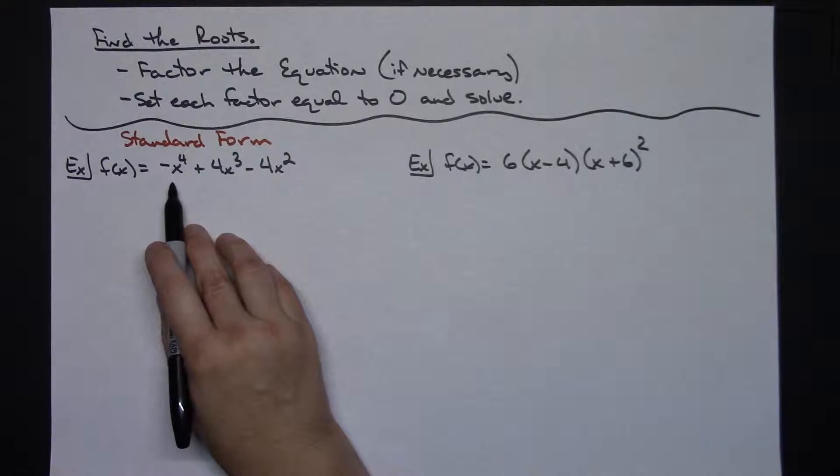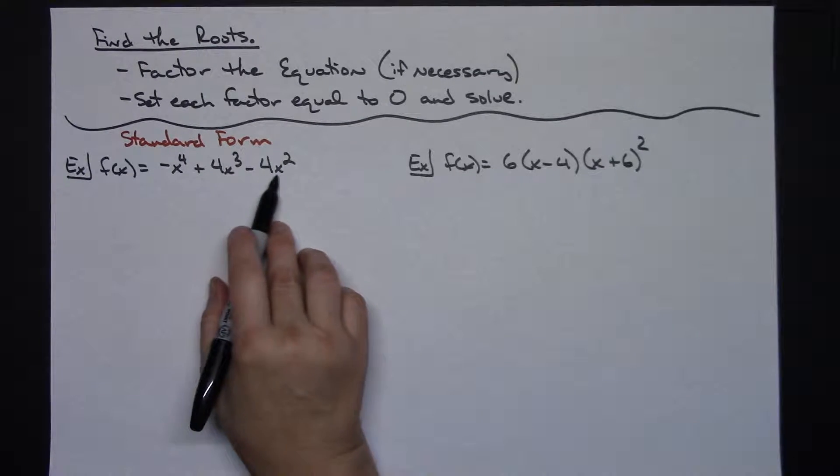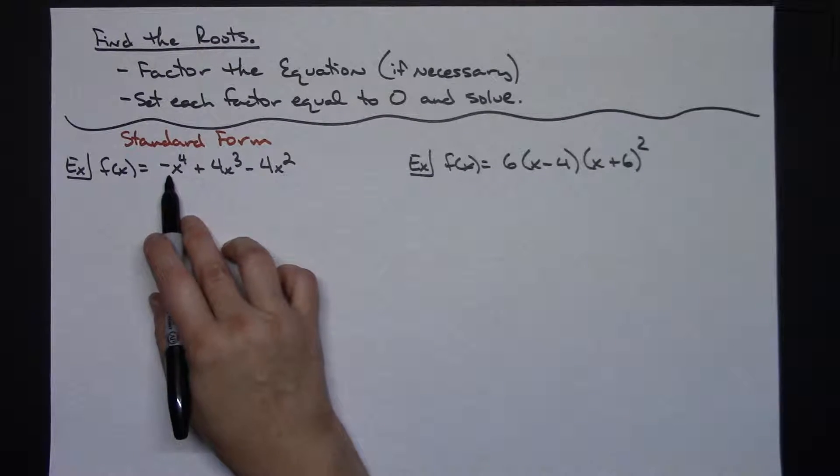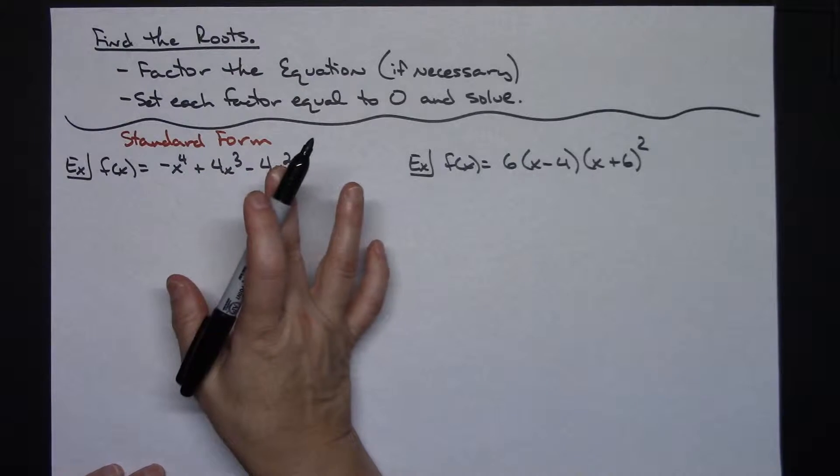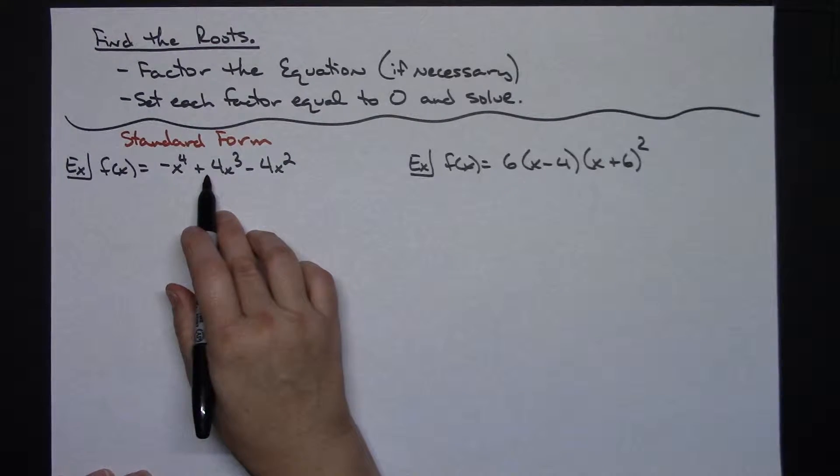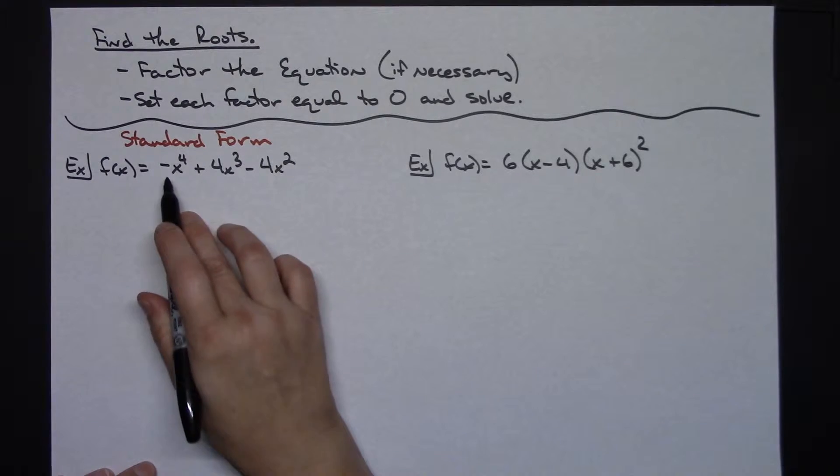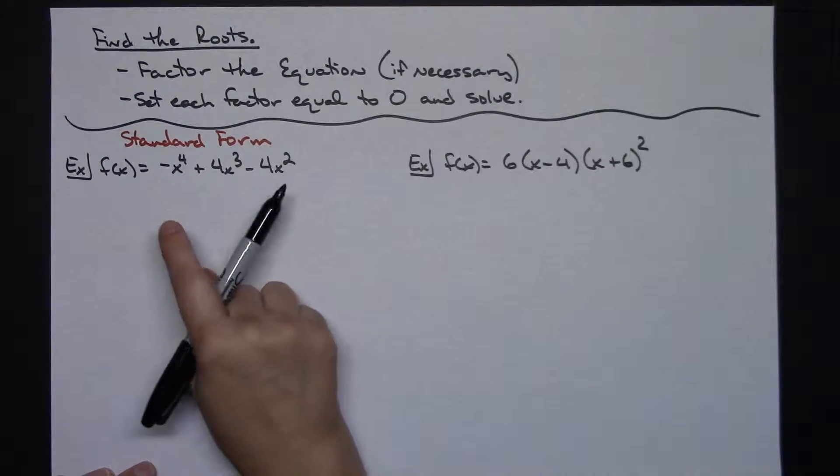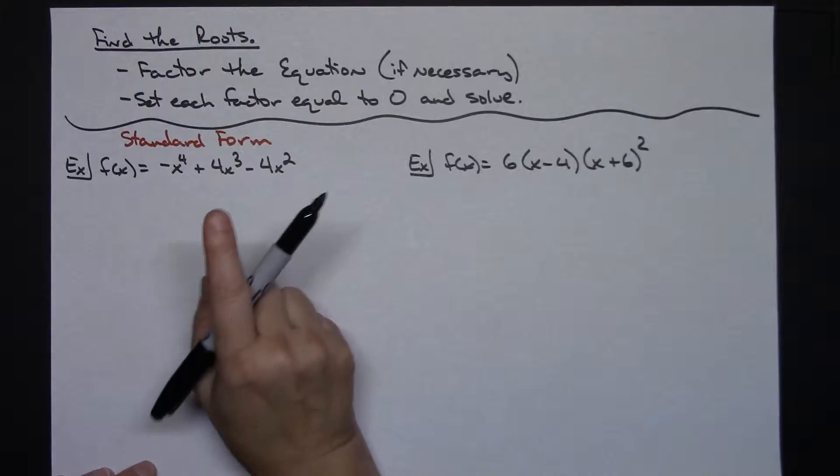Now looking at this, I've got three terms and that leading coefficient is negative. So you can do one of two things. I could factor out a negative x squared. That would take care of getting rid of that because it's going to make it easier to factor if I have a leading coefficient that's positive.